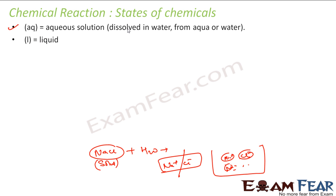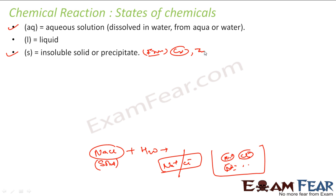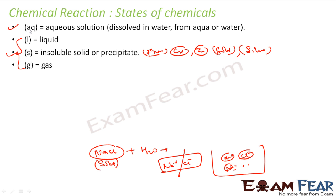Liquid is total liquid — for example, water or any juice. Insoluble solids are actual solids: for example, iron, copper, zinc, gold, silver — these are all solids because they don't dissolve in water. And then you have gas, which has fumes and similar properties. So you have four states typically: solid, liquid, gas, and aqueous — which means a substance that is partially or fully dissolved in water.